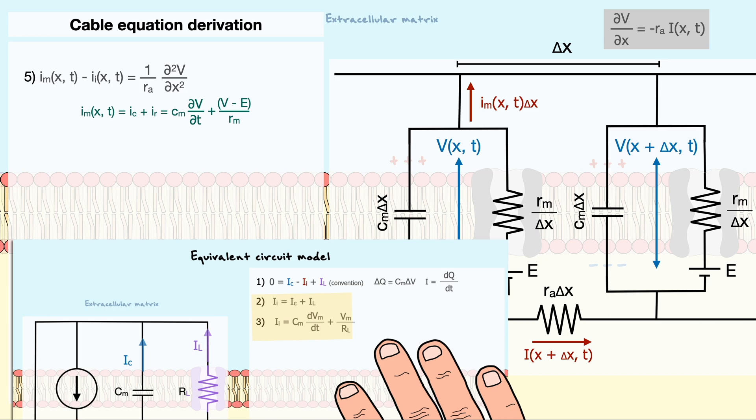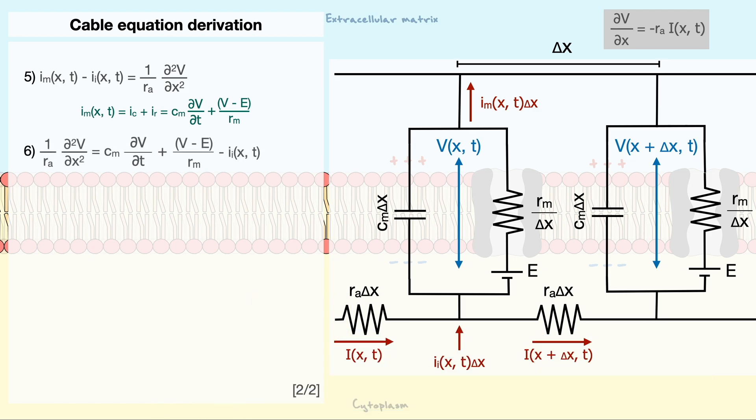Since the voltage is now a function of time and position, we need to use the partial derivative and not the simple derivative. Anyhow, we can replace the membrane current by this expression, which leaves us with this. The final step in our derivation is to multiply both sides by the resistance, which gives us this final equation.